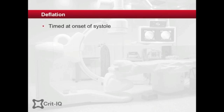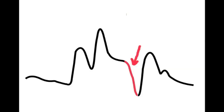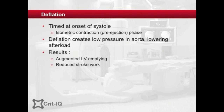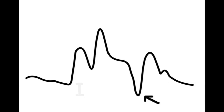Deflation of the balloon should occur at the onset of systole during the pre-ejection phase of isovolumetric contraction, when the left ventricle is building enough pressure to overcome the pressure in the aorta. Rapid deflation of the balloon creates an area of lowered pressure in the aorta just ahead of left ventricular ejection. This augments left ventricular emptying, reducing the left ventricular stroke work. With correct timing, the assisted end diastolic pressure should be a sharp V and lower than the patient's own end diastolic pressure.